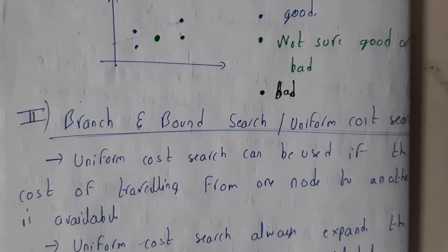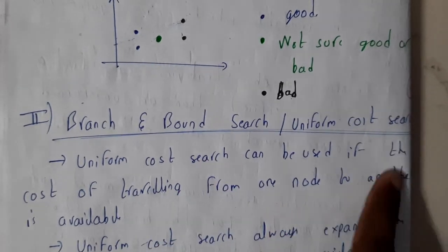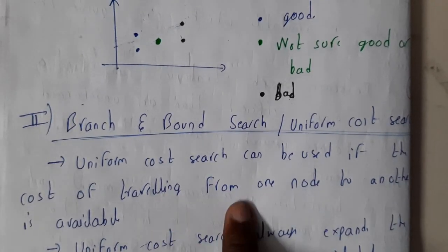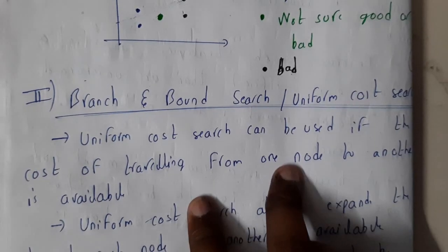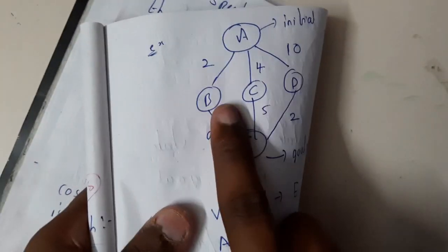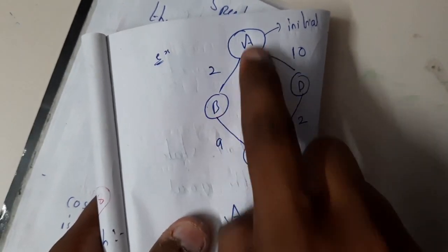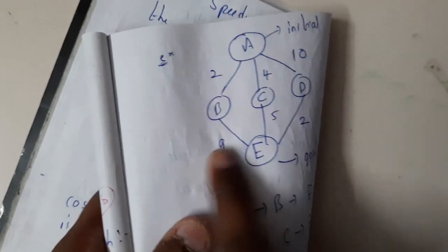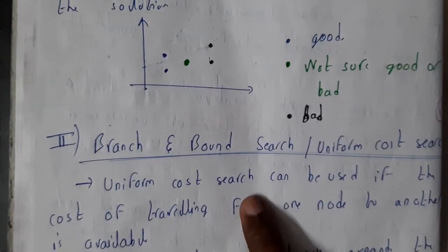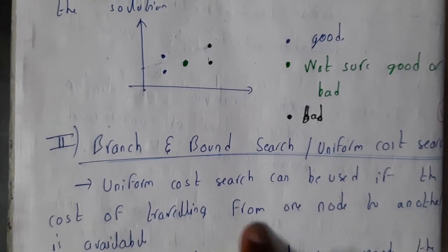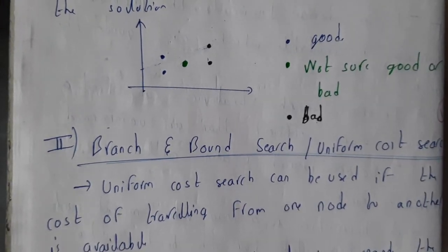Uniform cost search can be used if the cost of traveling from one node to another node is available. Basically, it should be given as a weighted graph case. A weighted graph will be having values on the edges. Uniform cost search can be used only if the cost information is available.